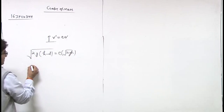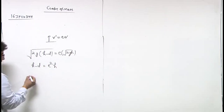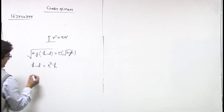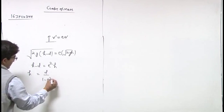By squaring both sides, H minus D equals E-squared H, so we get the relation H equals D over (1 minus E-squared).